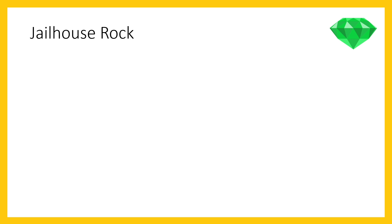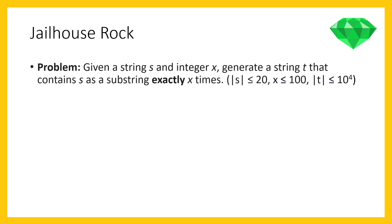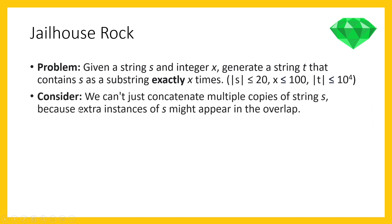Moving on to 'Jailhouse Rock.' In this problem, you're given a string s and an integer x, and asked to generate a string t that contains s as a substring exactly x times. The bounds are important here. One idea is to simply take x copies of string s and concatenate them, and this works most of the time — but not all of the time.